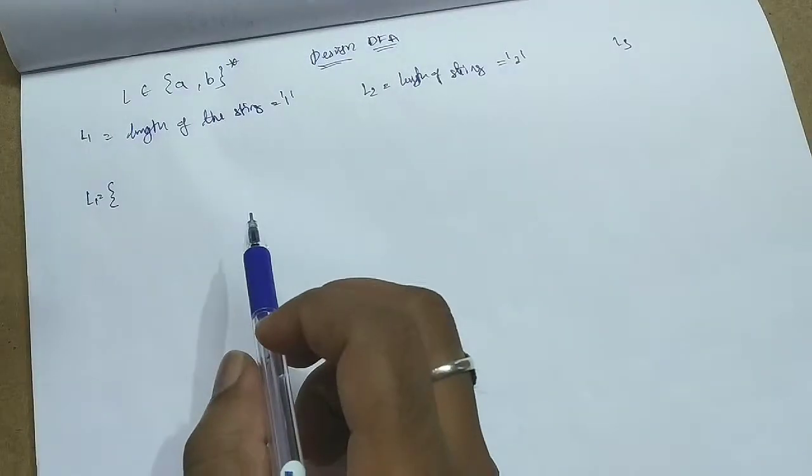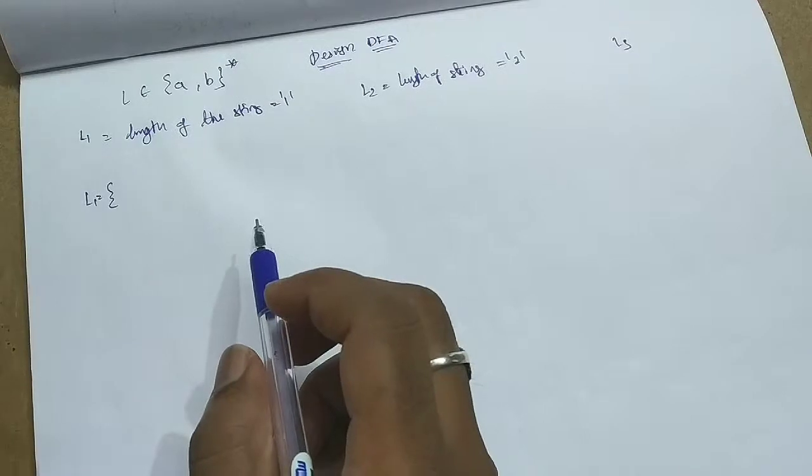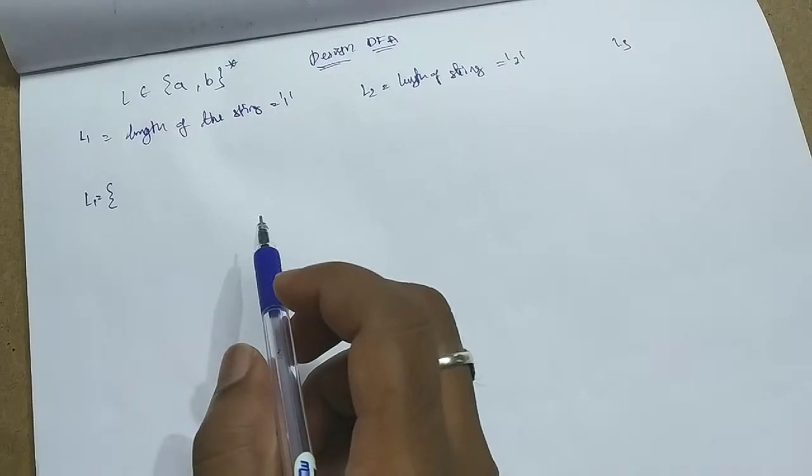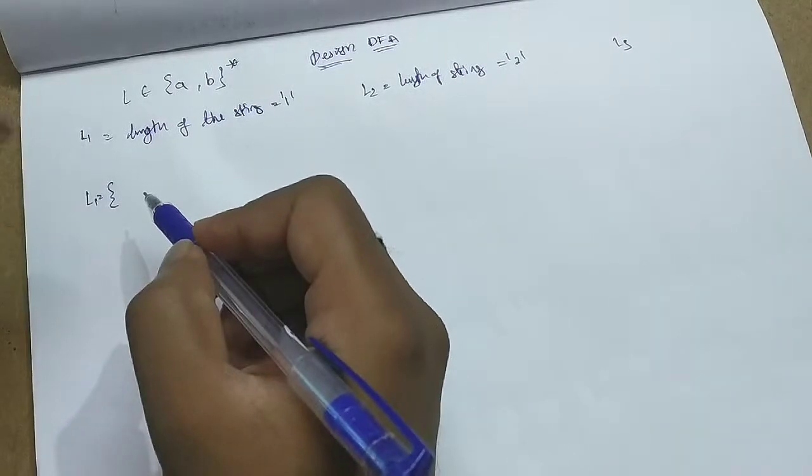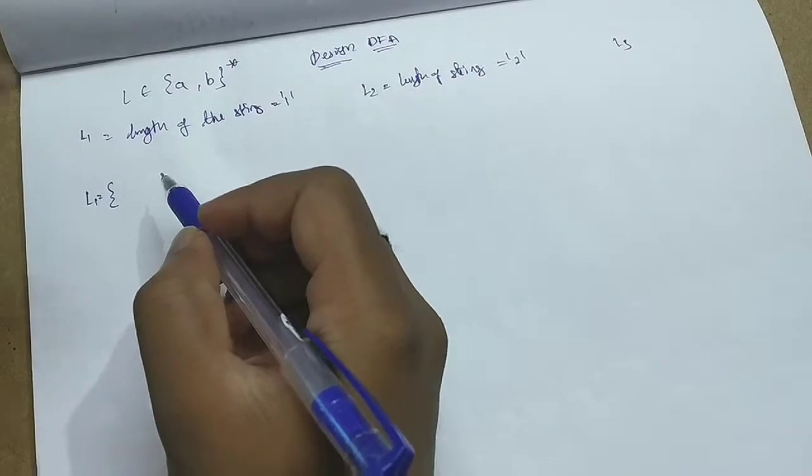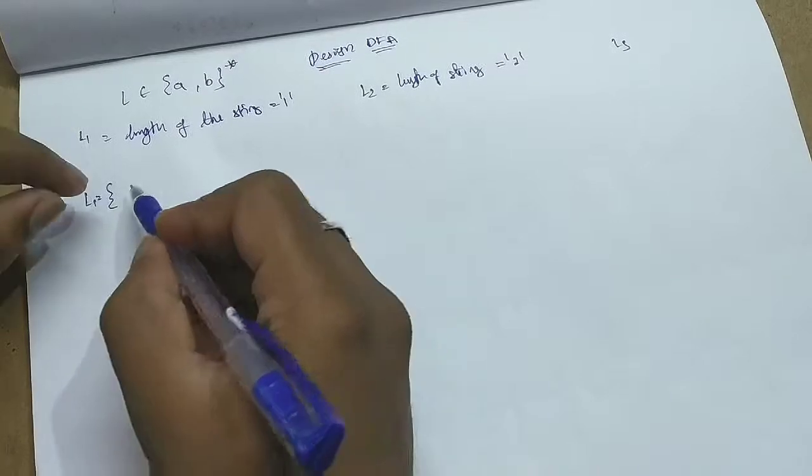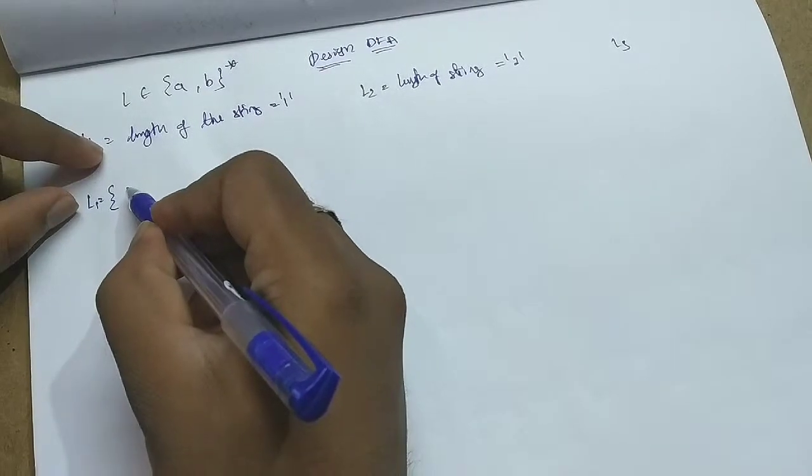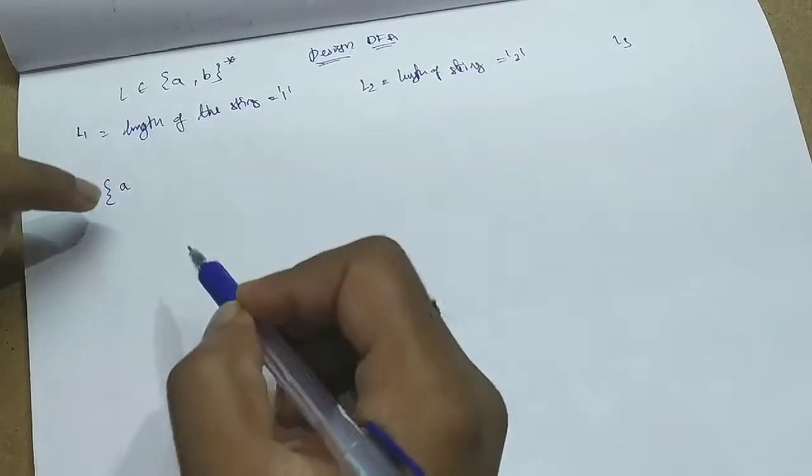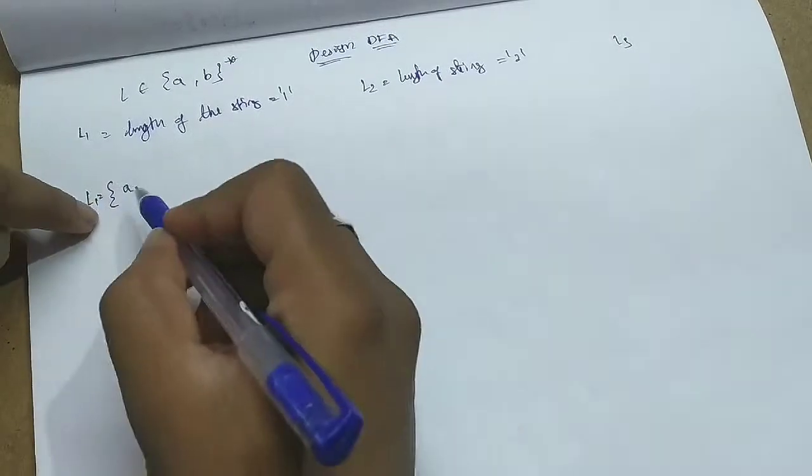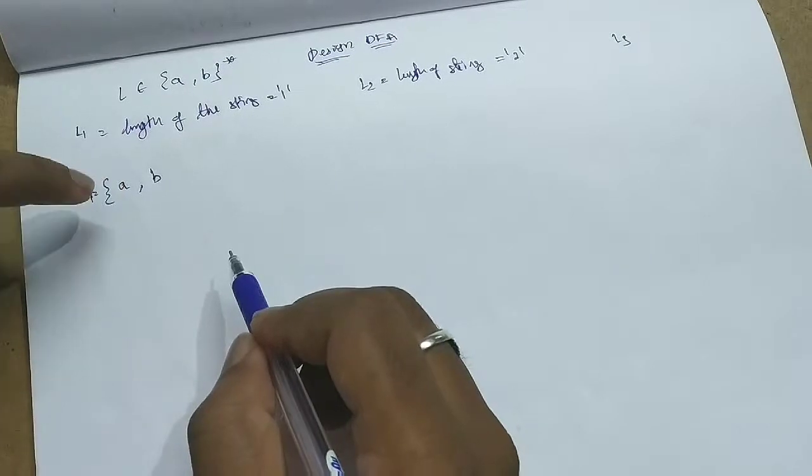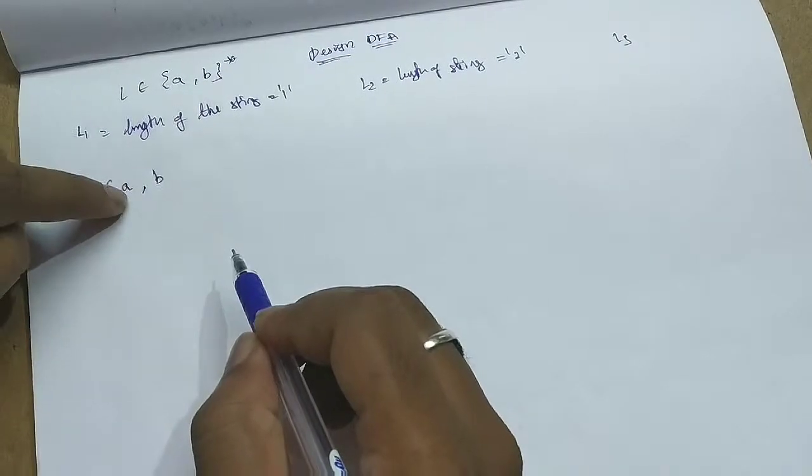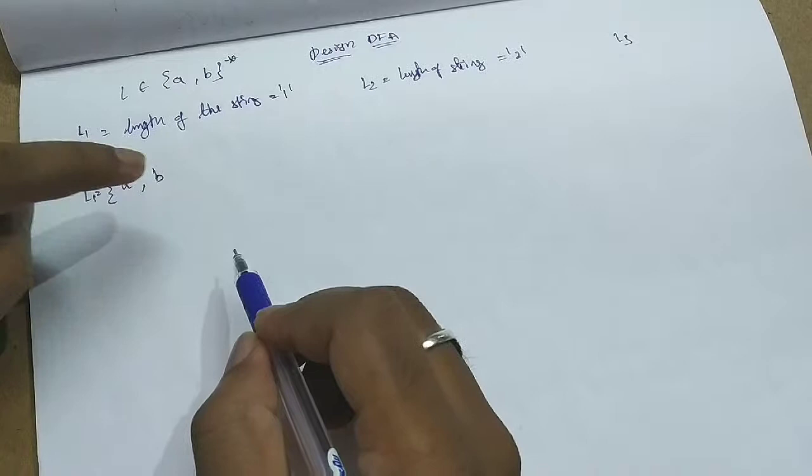Then length of the string equal to 1. What kind of strings that may occur in this language? Does epsilon occur? No, because length of epsilon is 0. So the strings of length 1 may be 'a' is the string which is having length 1, or 'b'. These are not symbols, I am saying that strings of length 1.